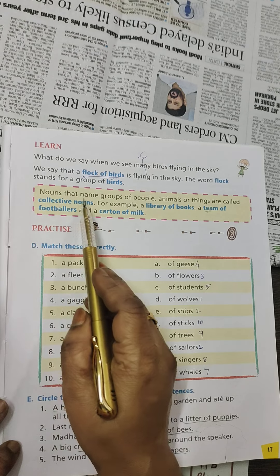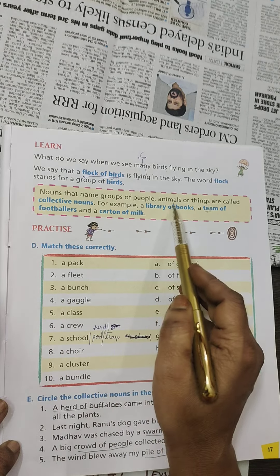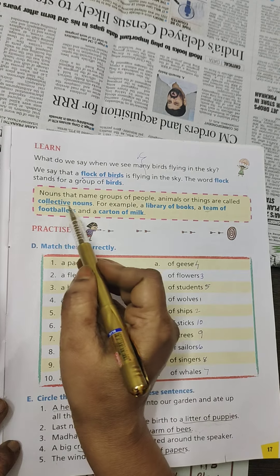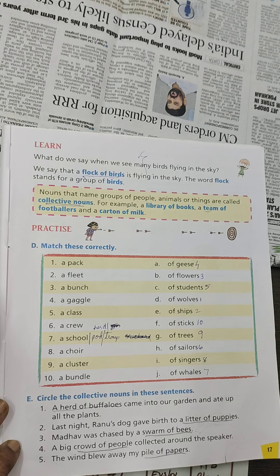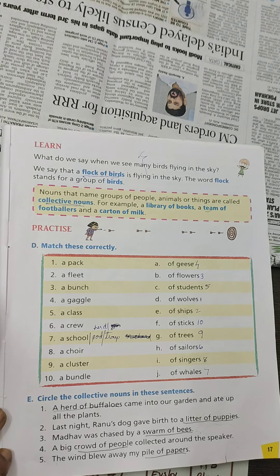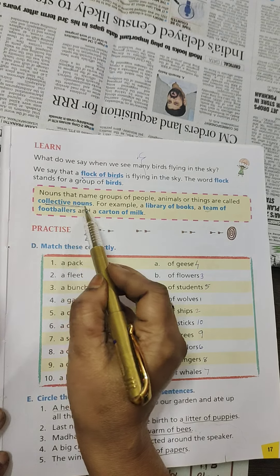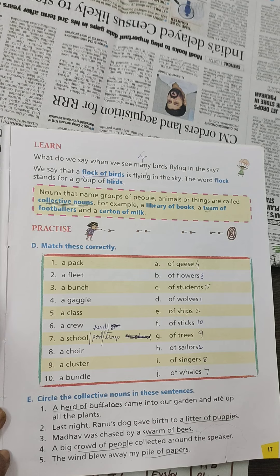Nouns that name a group of people, animals, or things are called collective nouns. The meaning of collective noun is whether it may be a group of people, group of animals, or group of things — a large number of people, animals, or things. All these collective nouns have different words.